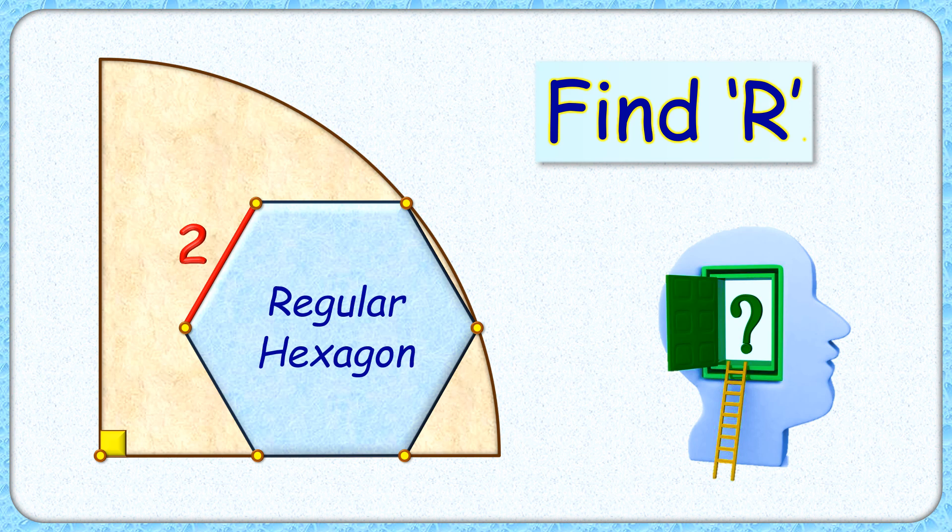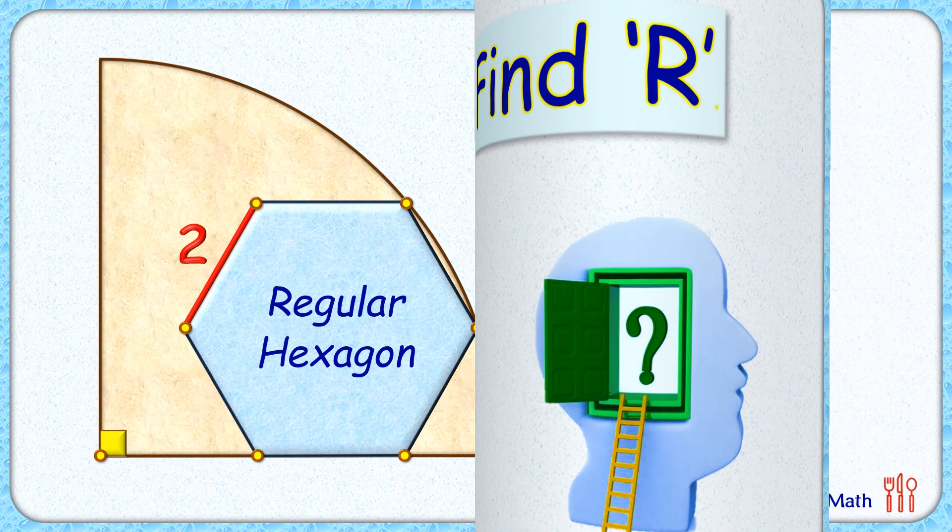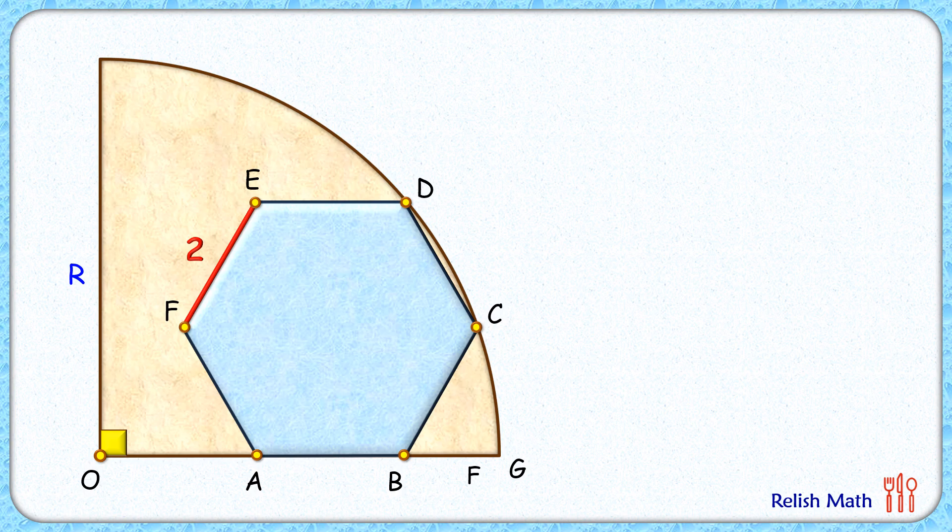In this interesting question, we're given a regular hexagon with side length 2 centimeters inside a quadrant. The exciting part is that with this limited information, we have to find the radius of the quadrant. Let's check this simple and elegant solution.